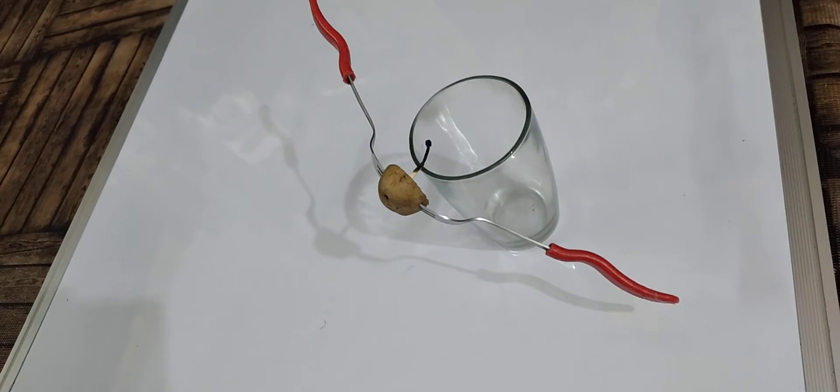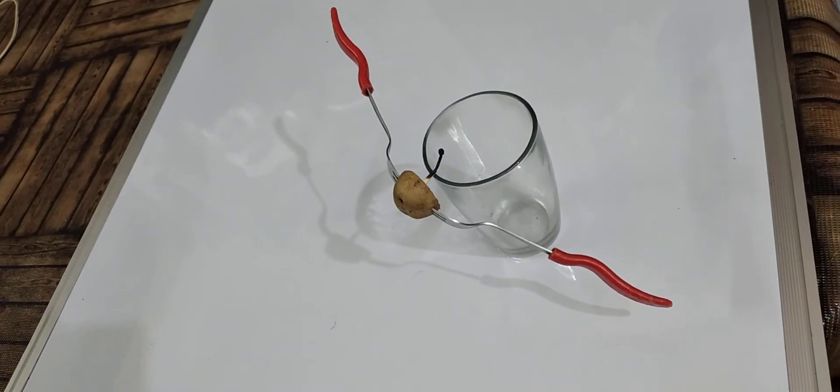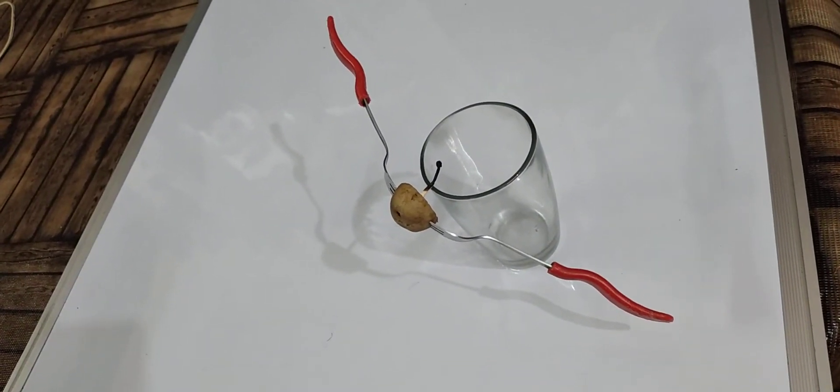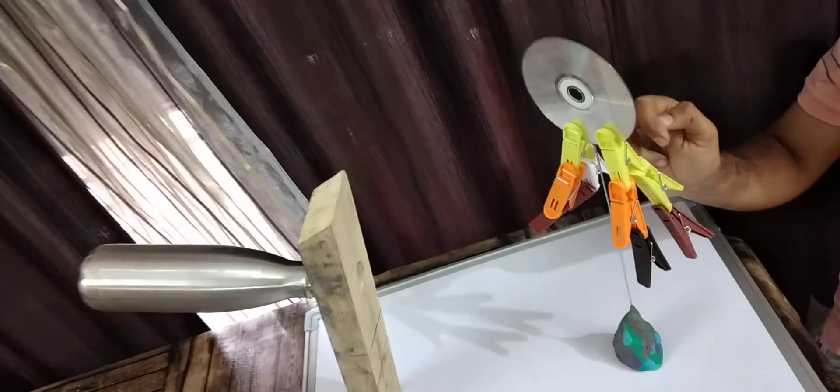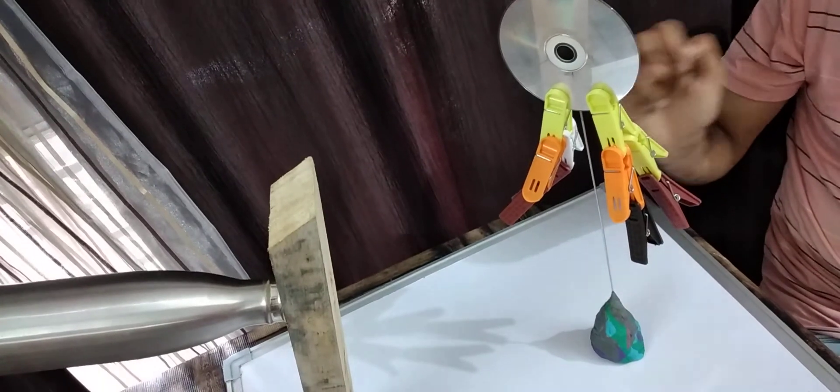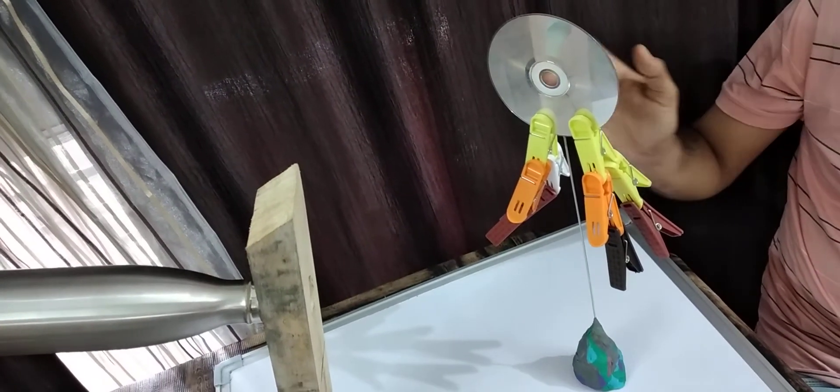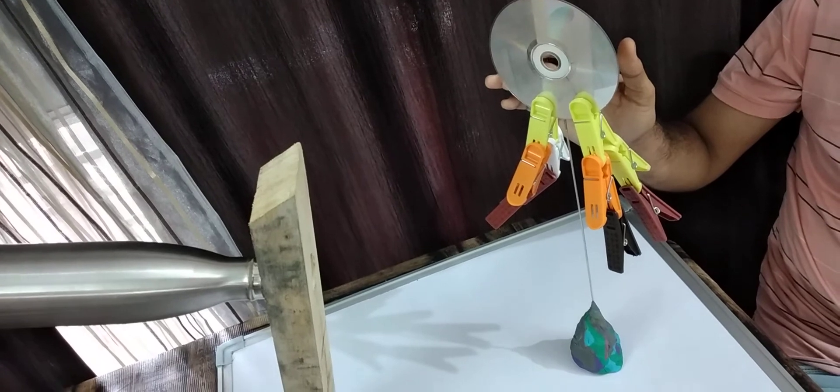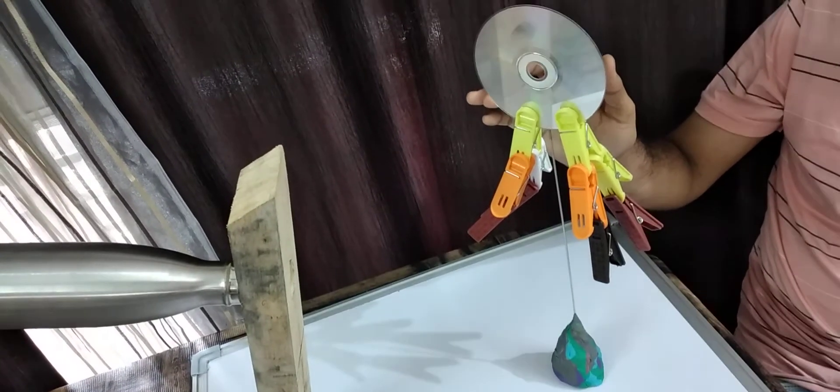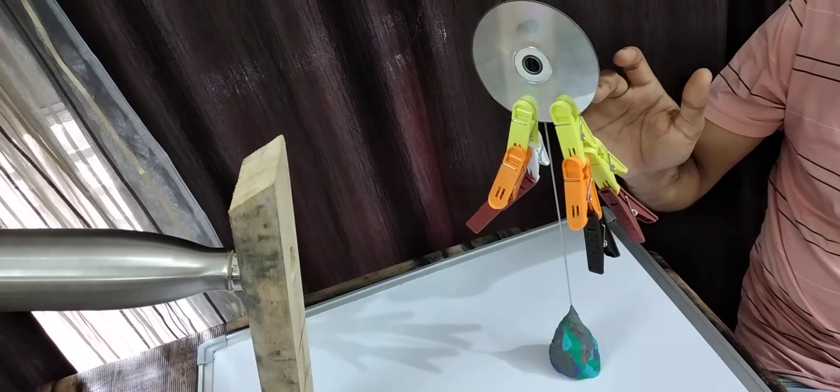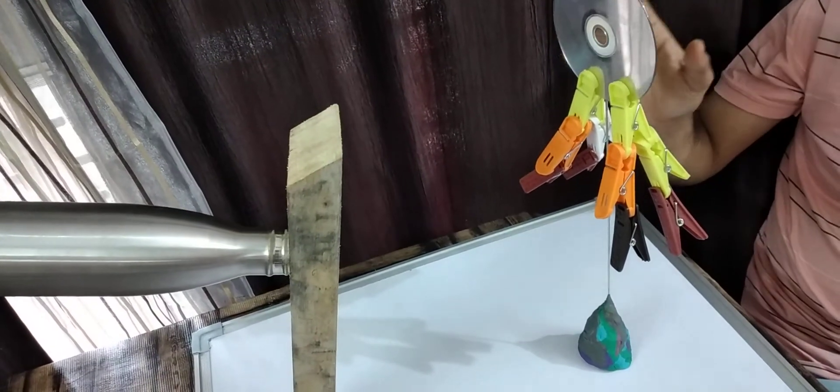Now you can see this arrangement. Here we have balanced our CD on this single point. You can see that the arrangement is in stable equilibrium. A little disturbance does not produce any unbalancing situation.